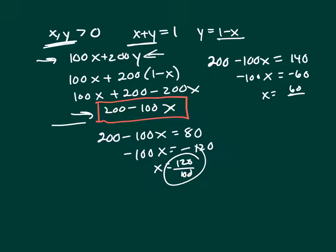So x is 60 over 100, and that's less than 1. And then we know the other one would be 40 over 100. So 140 works.